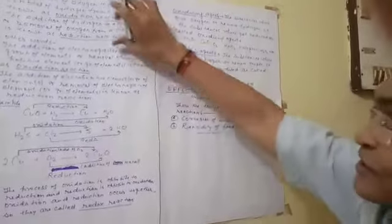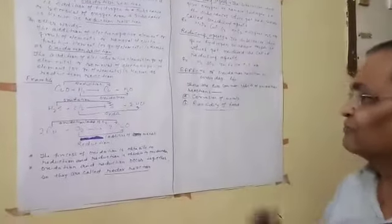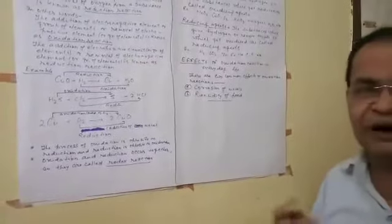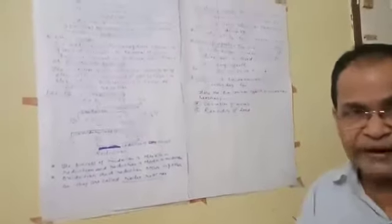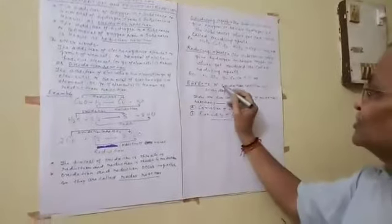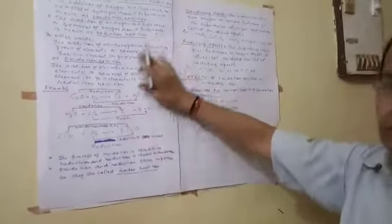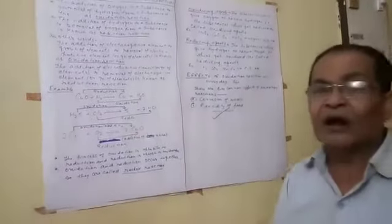Oxidation and reduction reactions play a very important role in our life, particularly oxidation reactions. There are two common effects which affect our life: first, corrosion of metals like rusting of iron, and second, rancidity — the spoilage of food materials due to oxidation. So these reactions are very important in our life.